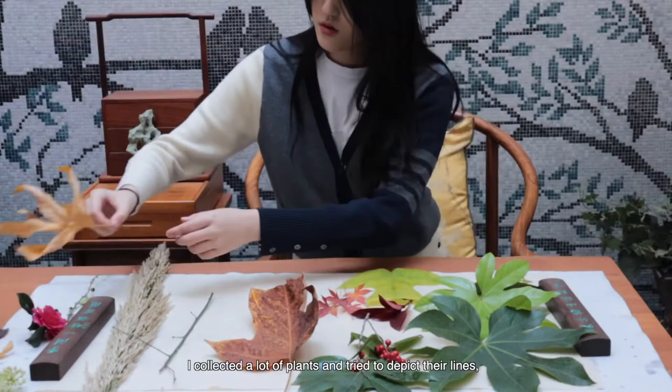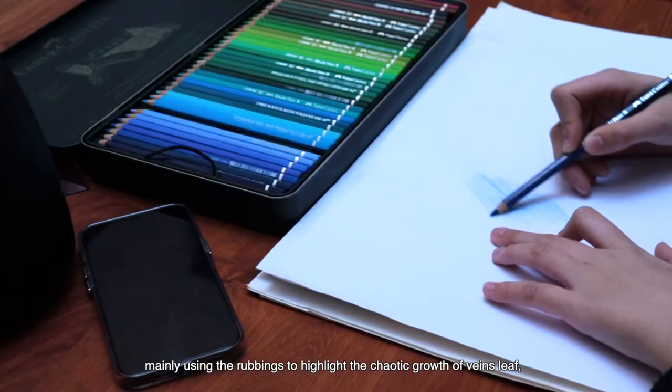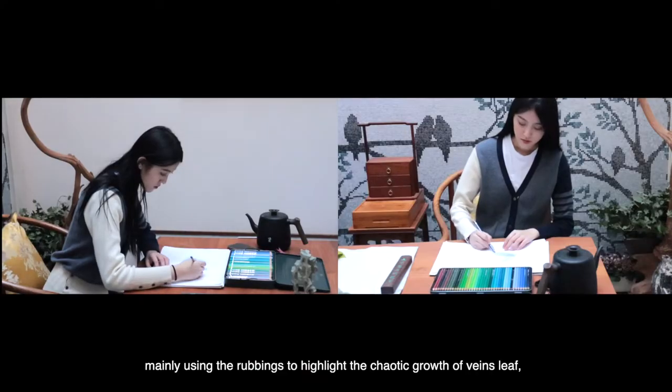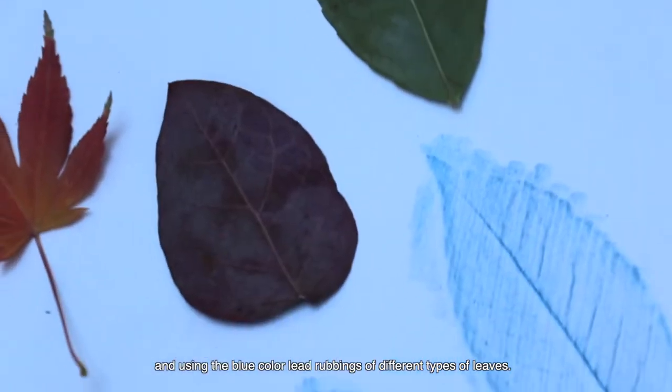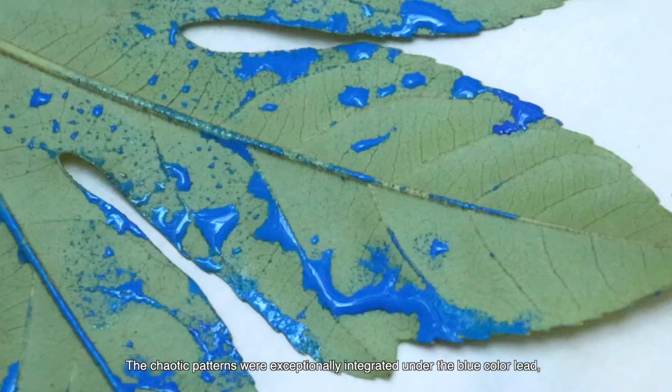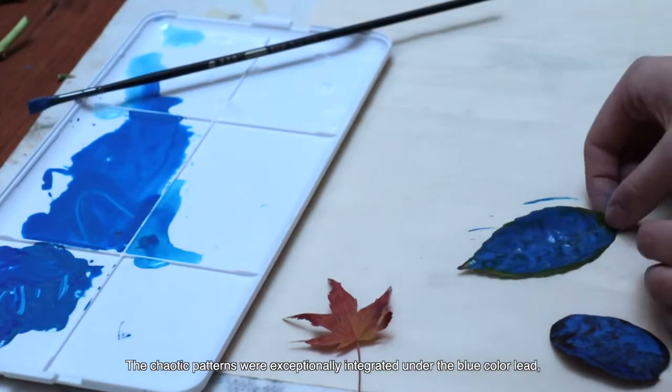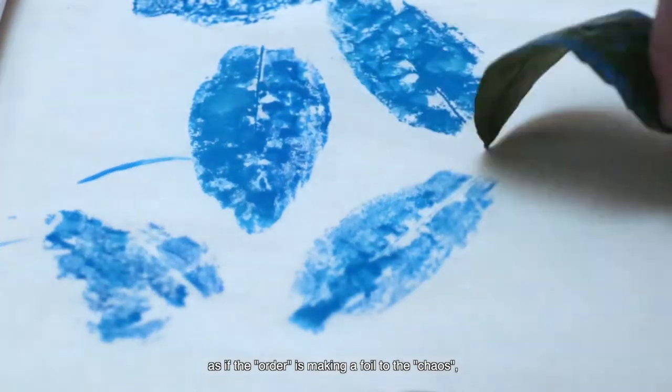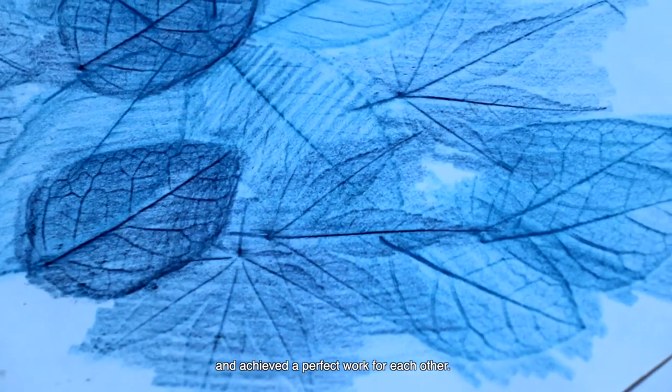I collected a lot of plants and tried to depict their lines, mainly using the rubbings to highlight the chaotic growth of leaf veins, and using the blue colored lead rubbing of different types of leaves. The chaotic patterns were exceptionally integrated under the blue color, as if the order is making the foil to the chaos, and achieved a perfect work for each other.